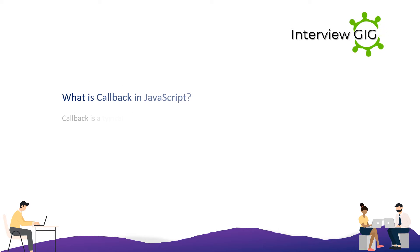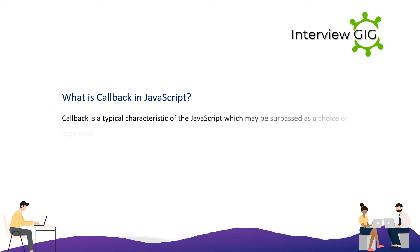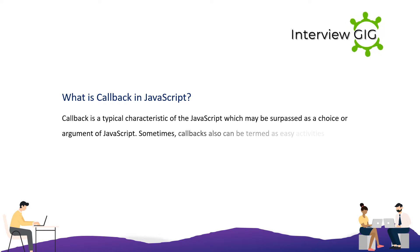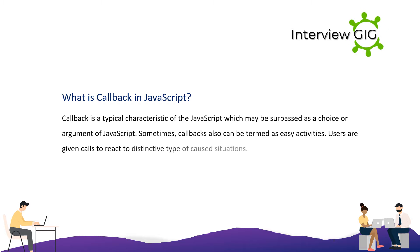A callback is a typical feature of JavaScript which may be passed as an option or argument of another function. Sometimes callbacks can also be termed as simple events. Users are given callbacks to react to distinctive types of triggered situations.